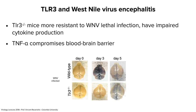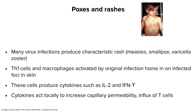Some viruses cause immunosuppression — they damage the immune response by replicating in immune cells, disturbing cytokine balances, or using their virokines and viroceptors to skew the cytokine response. Here's an example of immunosuppression during measles virus infection. Measles is a classic immunosuppressing virus.